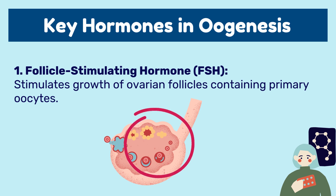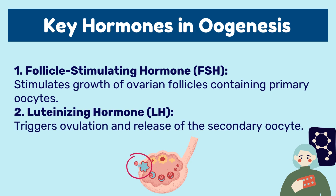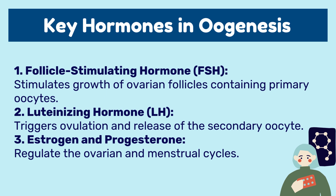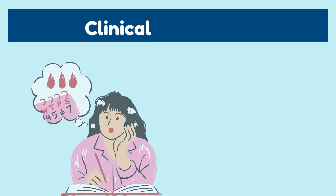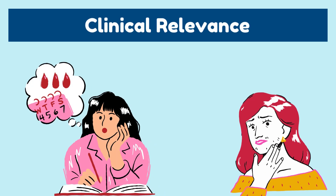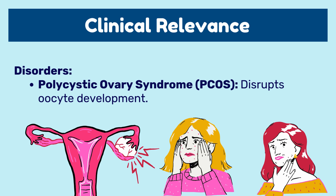Number two: luteinizing hormone, which triggers ovulation and release of the secondary oocyte. Number three: estrogen and progesterone, which regulate the ovarian and menstrual cycles.